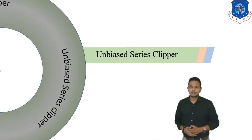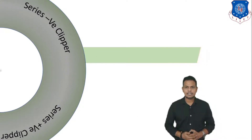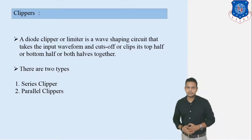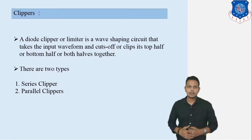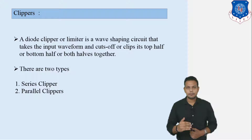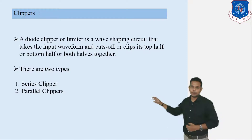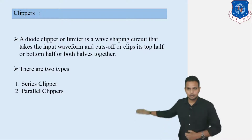So let us discuss about today's outcomes. First we will see about unbiased series clipper, then we will discuss about series positive clipper, and last we are going to discuss about series negative clipper. Diode clipper, it is also known as a limiter. It is a wave shaping circuit that takes the input waveform and cuts off or clips off the top half, bottom half, or both halves together. Clipper is divided into two parts: series and parallel. Clipper is also known as amplitude selectors, or sometimes slicers.